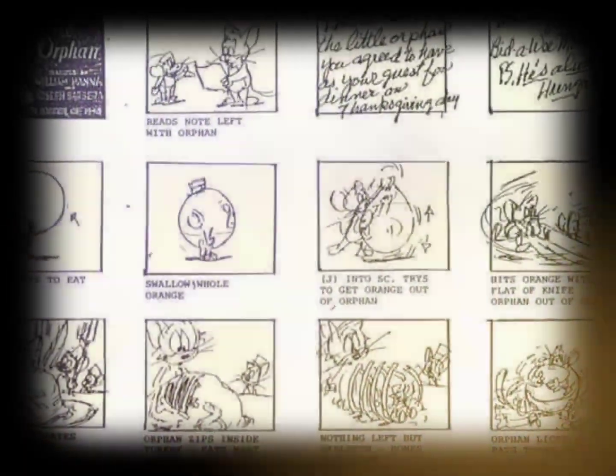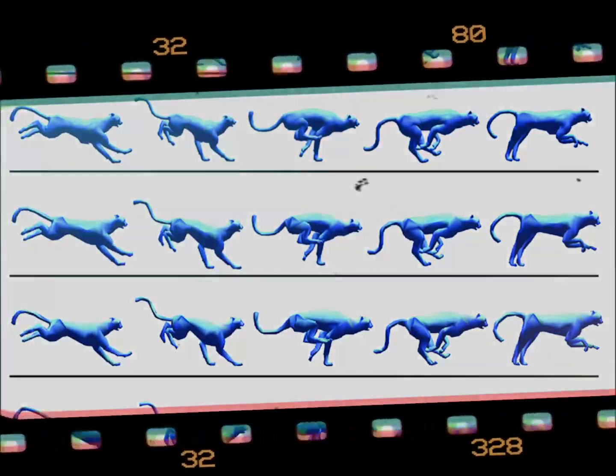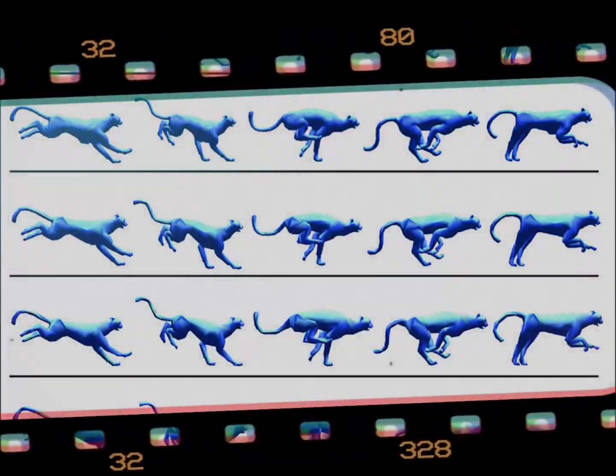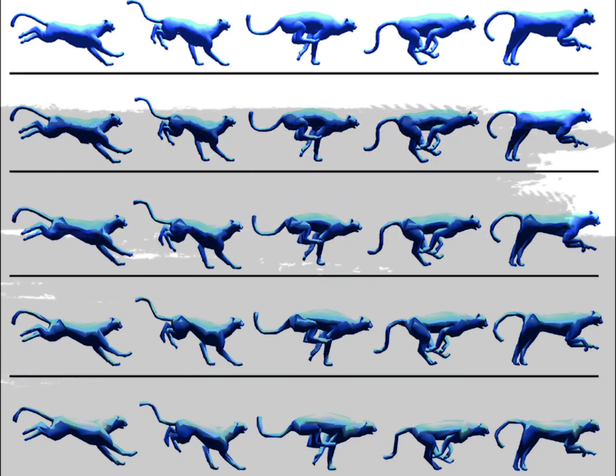The animation process began with sketches and storyboards. This was followed by a pencil test where the characters were animated frame by frame. The animation team was then able to fine-tune the action and timing of the characters.